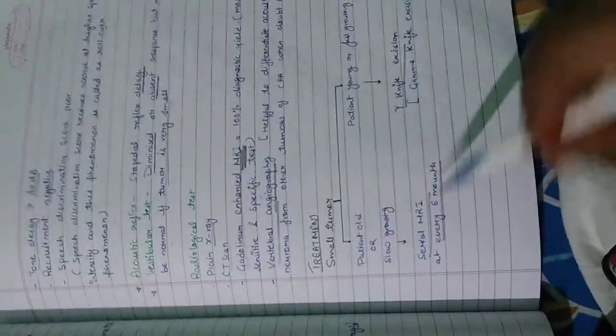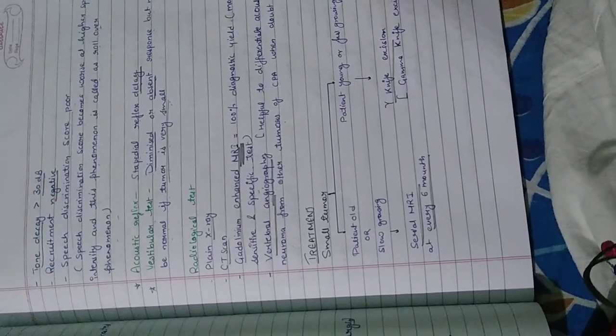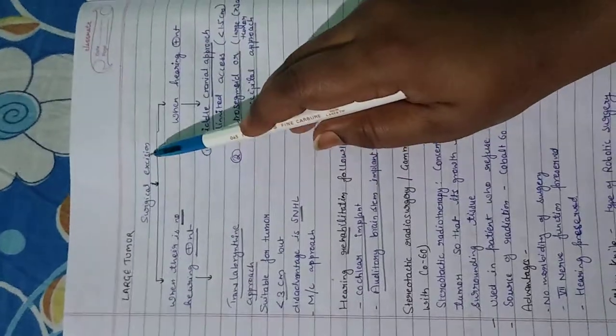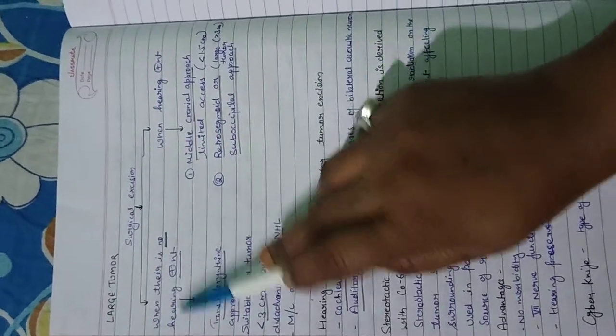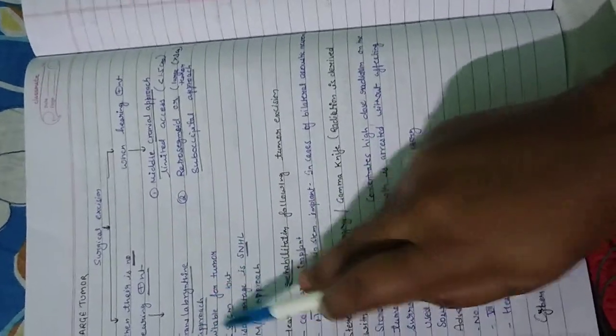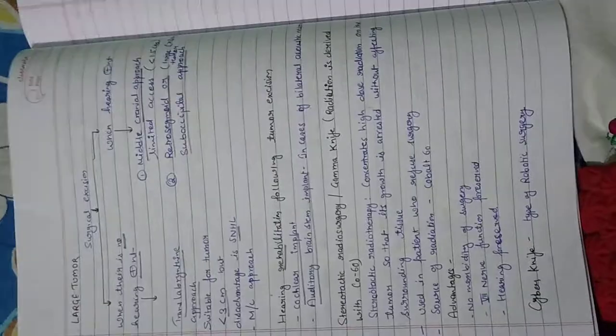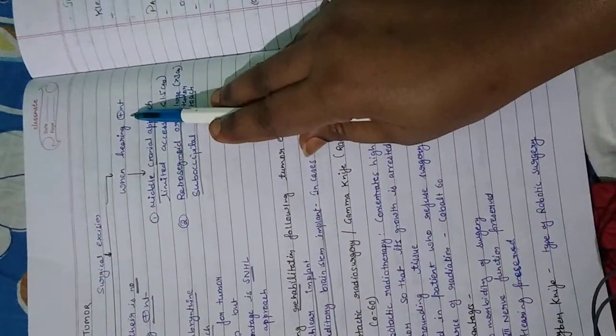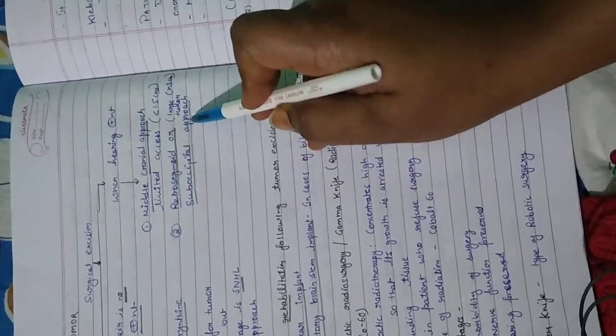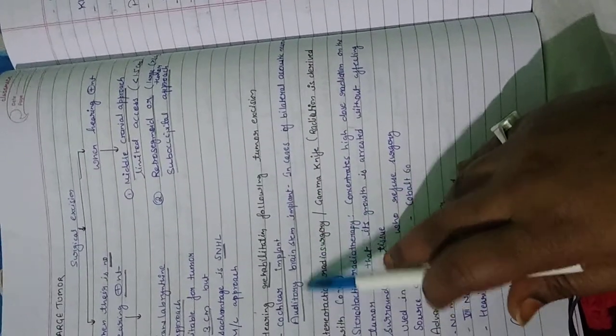Treatment: If patient is old and has slow-growing tumor, do serial MRI every six months. If patient is young or has fast-growing tumor, use gamma knife excision. If there is large tumor with no hearing present, do surgical excision via trans-labyrinthine approach. If hearing is present, use middle cranial fossa or retrosigmoid or suboccipital approach. Hearing rehabilitation following tumor excision: cochlear implant or auditory brainstem implant.